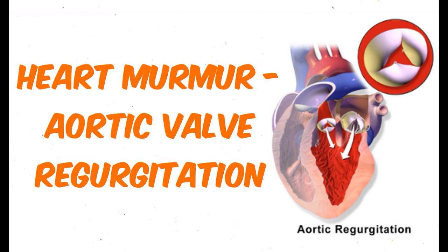To recap, the murmur of aortic regurgitation is a diastolic, decrescendo murmur, which is high-pitched in character. This murmur is heard in the third or fourth left intercostal space with the patient leaning forward.